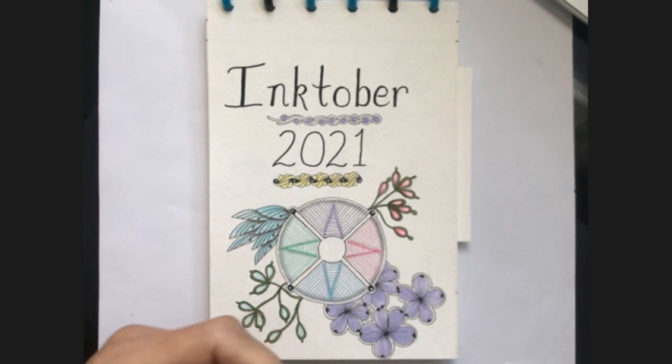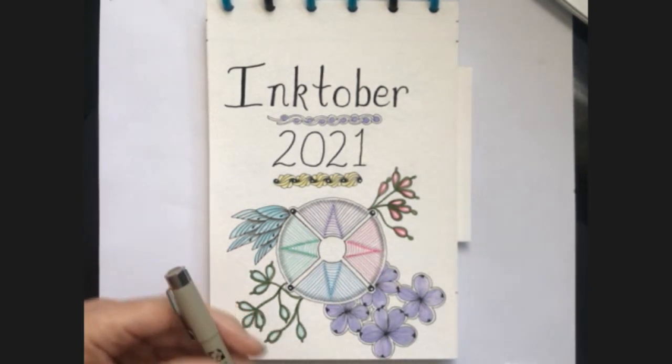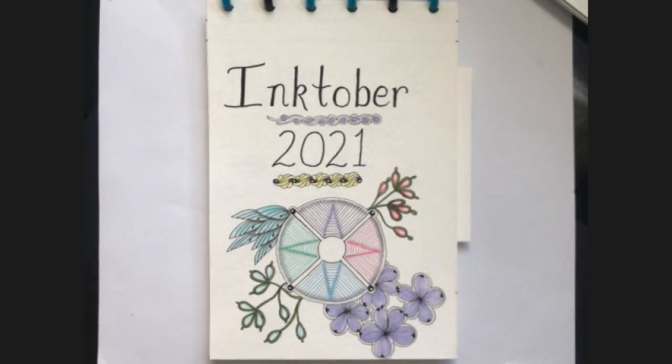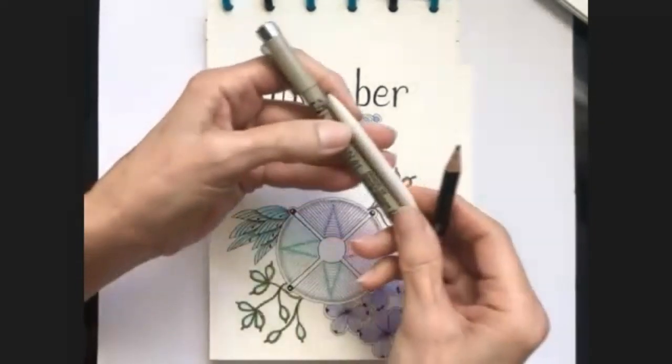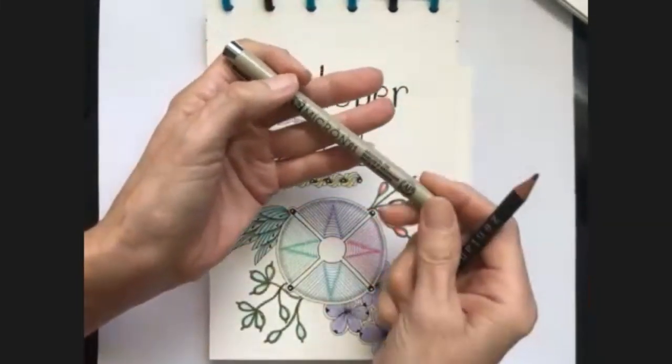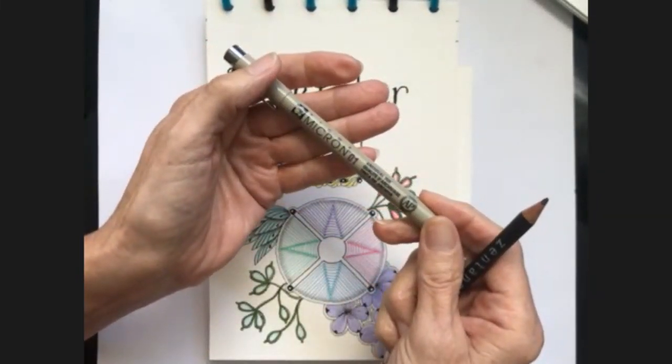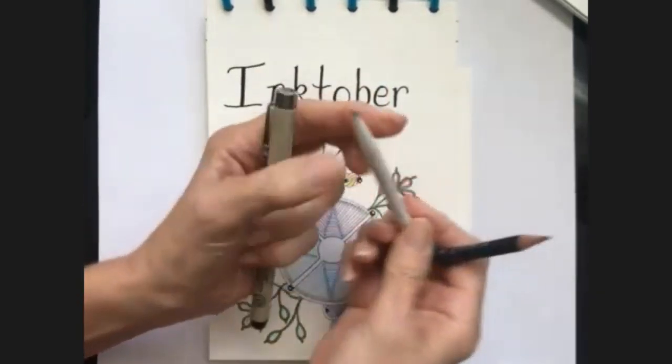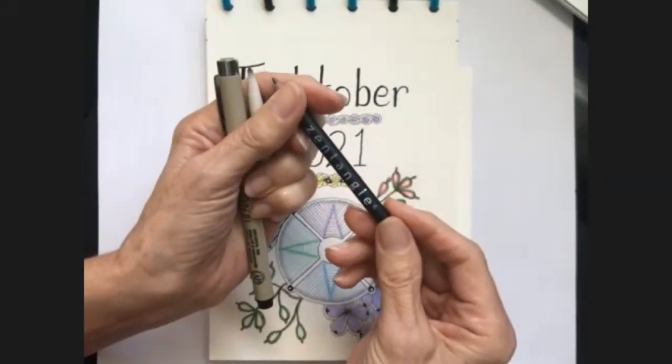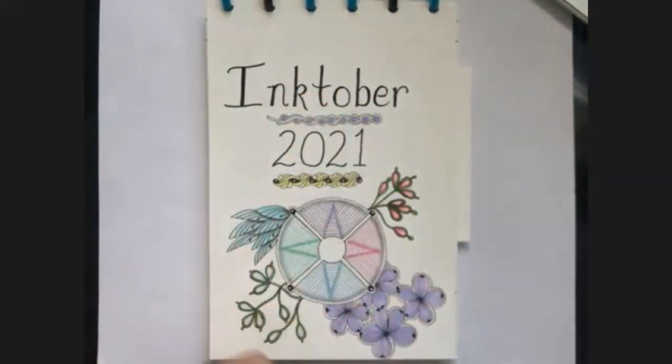Today is day 15, which is Ing by Zentangle, and I really like this pattern, so I think you're going to have fun with it. I'm going to use Micron 01, my blending stump, and a graphite pen.